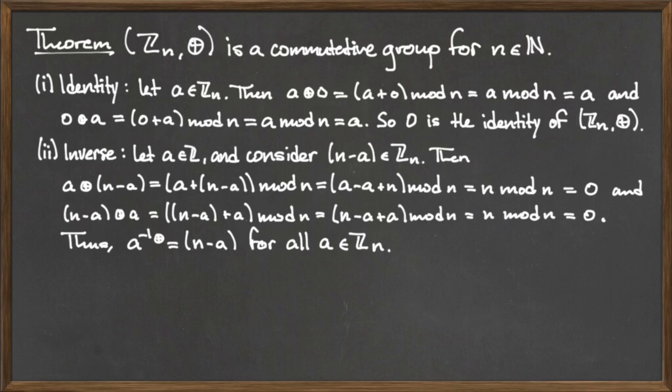Thus, the inverse of any element a in Z mod n is the quantity n minus a.